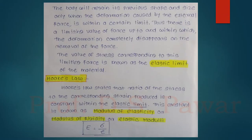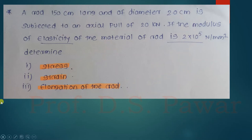Based on what we covered in yesterday's lecture — stress, strain, and elongation — today we are going to solve some problems on those concepts. Here is a numerical problem: A rod 150 cm long and of diameter 2 cm is subjected to an axial pull of 20 kN. The modulus of elasticity of the material is 2×10⁵ N/mm². Determine the stress, strain, and elongation of the rod.